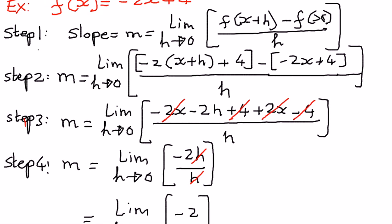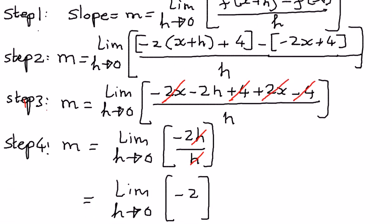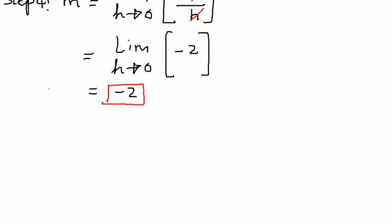So, to sum it up, if we had a function f of x equals negative 2x plus 4, we applied the formula of the derivative, and then we simplified and followed all the steps required. We were able to find the derivative of this function, which came out as equal to negative 2.